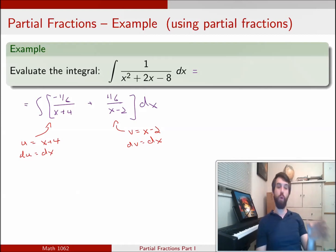So the first sum is just minus 1 sixth over u, and therefore is going to be equal to minus 1 sixth the ln of whatever the u is, the ln of x plus 4. And the second one is going to be 1 sixth, 1 over v, so it's going to be ln absolute value of v, and so ln of x minus 2 plus c.